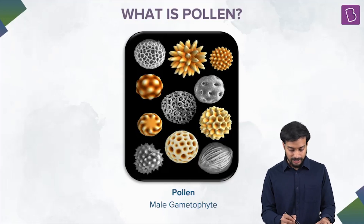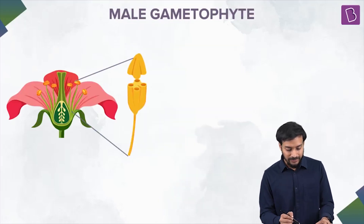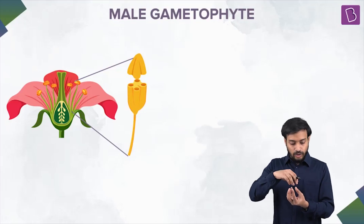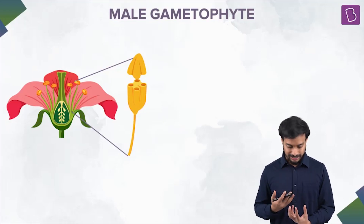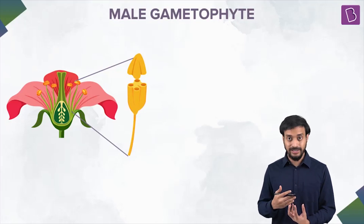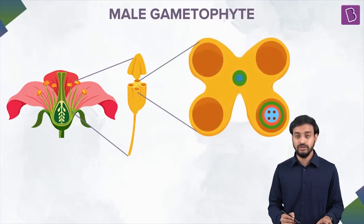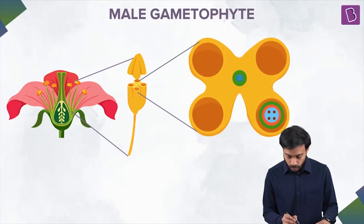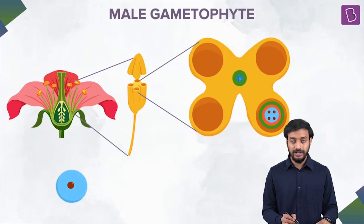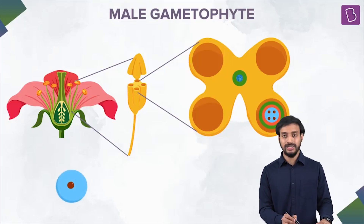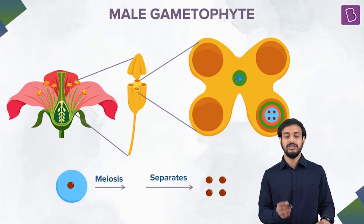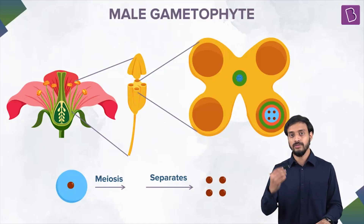The pollen is the male gametophyte. If you cut the anther and look at it at an angle of 90 degrees, you will see four lobes — tetralocular. Inside the lobes is present the microspore mother cell. The microspore mother cell undergoes meiosis and forms the microspores. These separate and are basically the pollen grains — they mature and form the pollen grains.